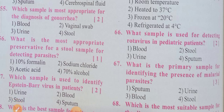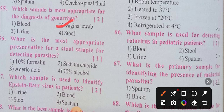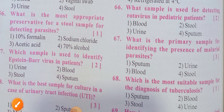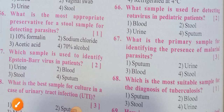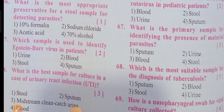For gonorrhea diagnosis, option 2 is the correct answer: vaginal swab. What is the most appropriate preservative for a stool sample for detecting parasites? Option 1 is the correct answer: 10% formalin. 10% formalin is used to preserve stool samples to detect parasites.